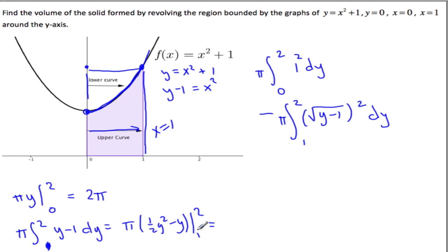Pi of 1 half y squared minus y from 1 to 2. Substitute in 2, that's pi times 4 over 2 is 2, minus 2 minus pi times 1, so that's 1 half, minus 1. So that's 0. That goes away.